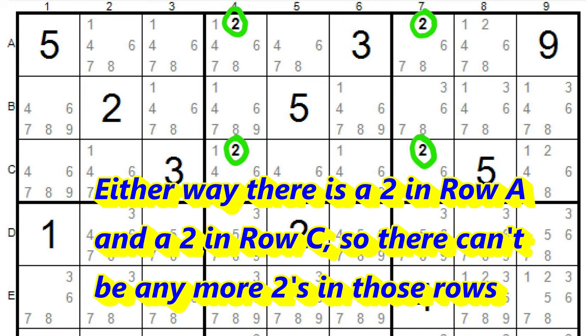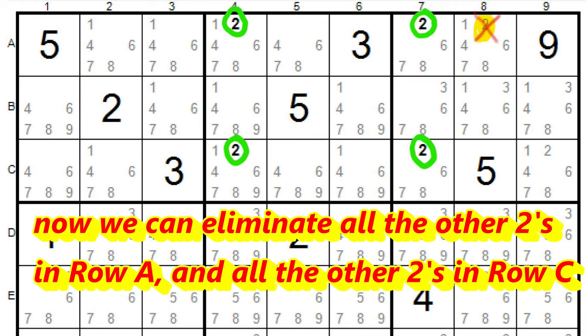So there can't be another two in row A or row C. So now we can eliminate all the other two candidates in row A, and all the other two candidates in row C.